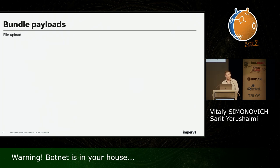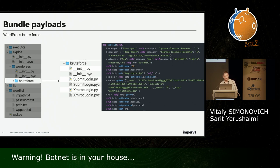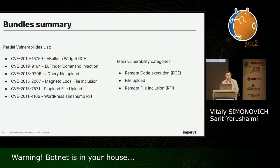Almost all payloads for the bundles contain the same payload — a PHP script that will allow further upload of additional files. However, we also discovered a different bundle whose purpose is to brute-force WordPress login sites. We suspect this module was used to enrich the repositories. In total, we found 17 bundles, each targeting a different PHP framework, mostly exploiting vulnerabilities related to remote code execution, file upload, and remote file inclusion. Two main payloads lead to persistence on the victims, after which the botmaster can connect and expand its activity.